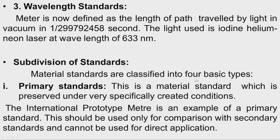Material standards are classified into four basic types. The first is the primary standard — a material standard preserved under very specifically created conditions like 20 degrees Celsius. One example is the international prototype meter. This cannot be used for direct application; it will always be used only for comparison with secondary measurement standards.